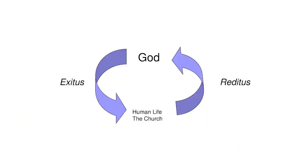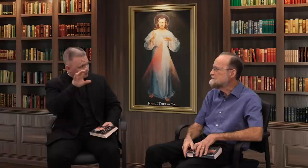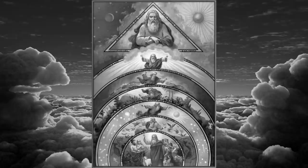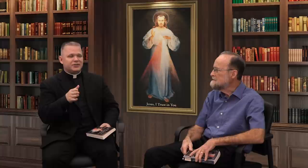Thomas Aquinas talks about this — Father Seraphim used to talk about this. The fact that our faith is a circle, the exitus reditus, where all comes from God and all returns to God. Thomas Aquinas used to say our faith is based on this circular understanding. And I find it fascinating because all comes from the Father. The first great act of mercy is creation, and who do we attribute that to? The first person of the Trinity — God the Father.